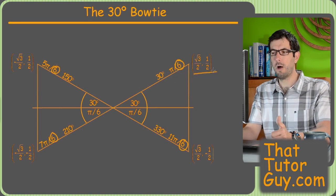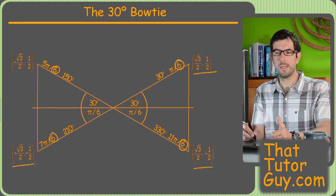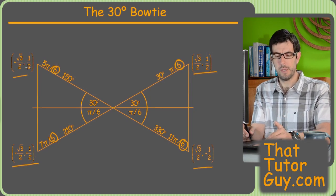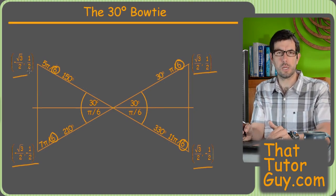But the main point of the bowtie is that all these four sets of coordinates are totally identical, except for plus and minus sign differences. And to figure out the plus and minuses, you can just think about the quadrant you're in.